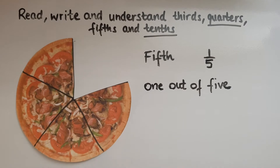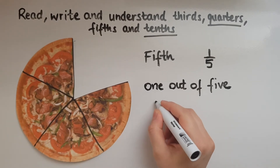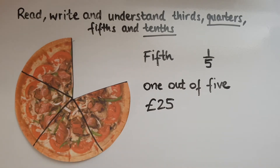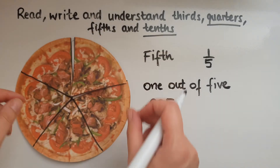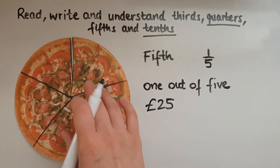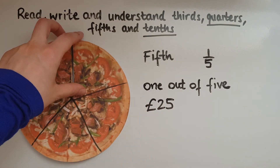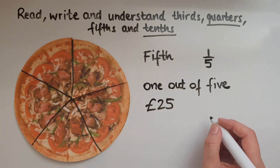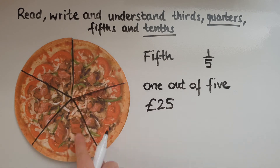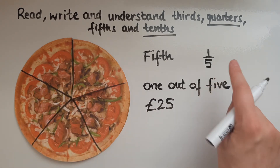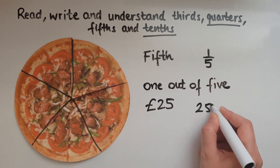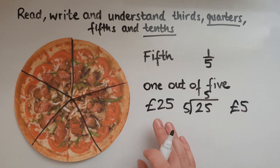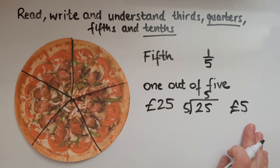What is one fifth of £25? Let's suppose the whole pizza costs £25 — what is the cost of just one slice? Sharing that equally, that would be divided into five, just like the pizza was cut into five. So 25 divided by five gives me five. One fifth of £25 is £5.